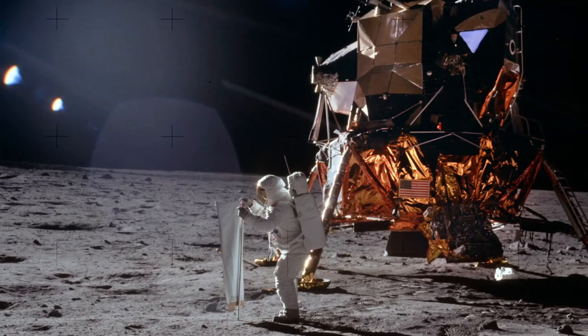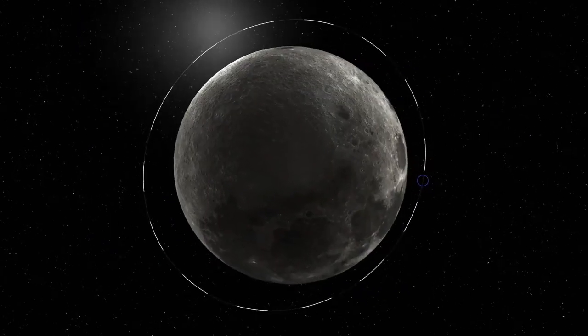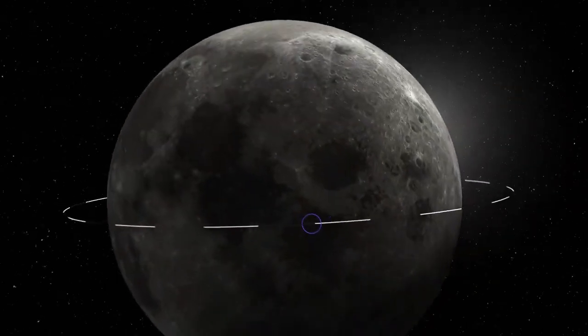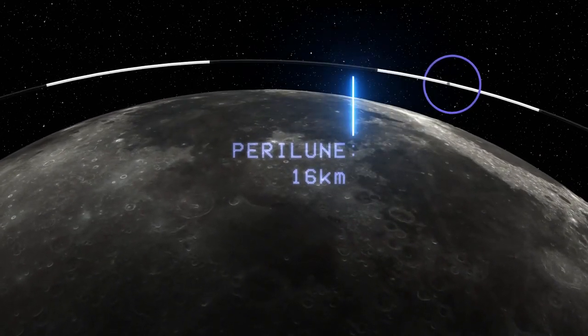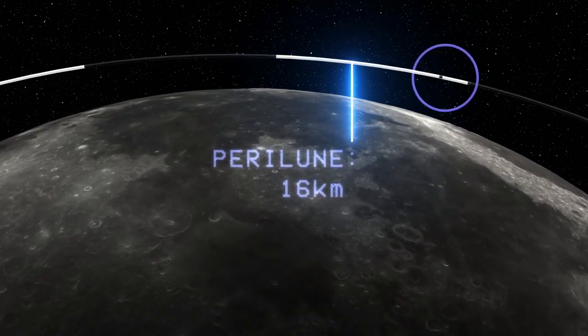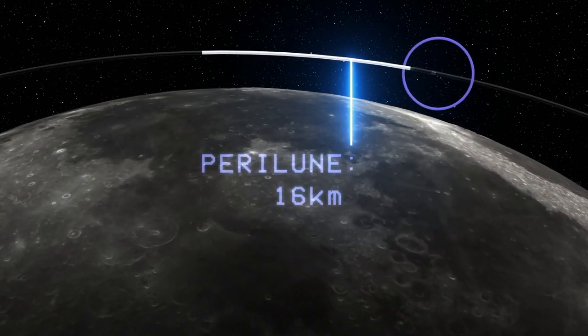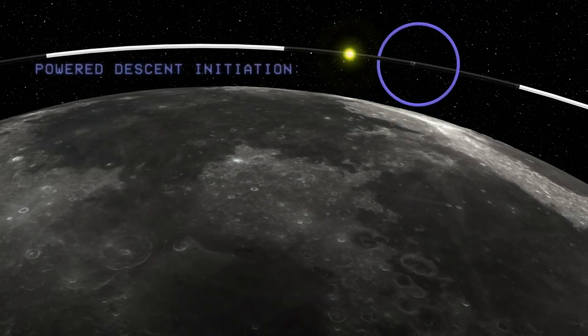The Apollo 11 Lunar Module Eagle, flown by Neil Armstrong and Buzz Aldrin, took about 12 and a half minutes to go from its orbital speed of nearly 6,000 kilometres an hour to a soft touchdown on Mare Tranquillitatis. This was the first Apollo landing and it would prove to be the most arduous. Prior to its descent, Eagle was orbiting the moon around the lunar equator in an east to west direction. This orbit's low point was only about 16 kilometres in altitude — a little over 50,000 feet — and would occur about 500 kilometres east of the landing site. Here Eagle's main engine would be ignited to begin the descent to the surface, an event called Power Descent Initiation or PDI.